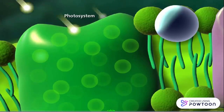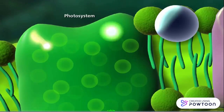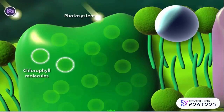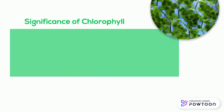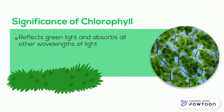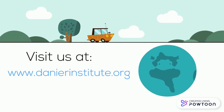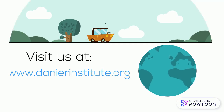Inside of the chloroplasts, there are photosystems which help with photosynthesis, but they also contain chlorophyll pigments which absorb the photons of light. Chlorophyll is important because it is the molecule that does the actual reflecting of green light and absorption of the remaining wavelengths. Thank you for watching, and feel free to visit us at www.danyardinstitute.com.